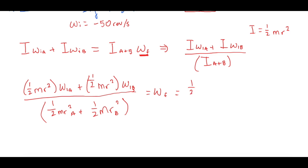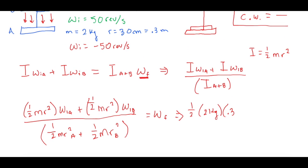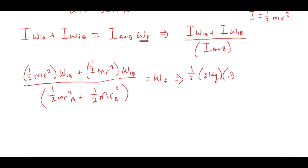So now when we plug it in, we get 1 half times the mass of A, which was, let's see, they're both 2 kilograms, times the radius of A, which was 0.3 meters squared, times negative 50 revs per second. And then 1 half, 2 and 0.2, it's radius squared, times 50 revs per second, and that's positive. Sorry, that looks really bad, I ran out of room.